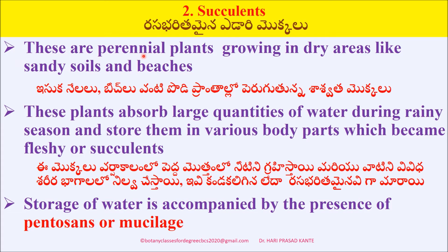The second category is succulents. These are perennial plants growing in dry areas like sandy soils and beaches. These plants absorb large quantities of water during the rainy season and store them in various body parts which become fleshy or succulent. The storage of water is accompanied by the presence of pentosans or mucilage.